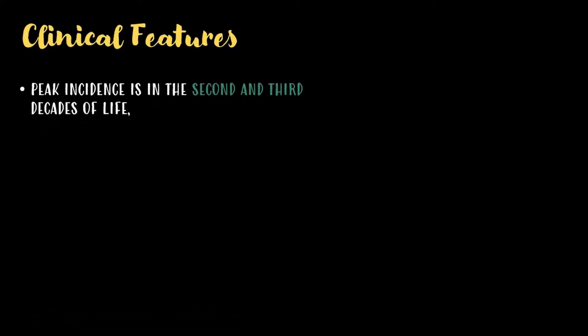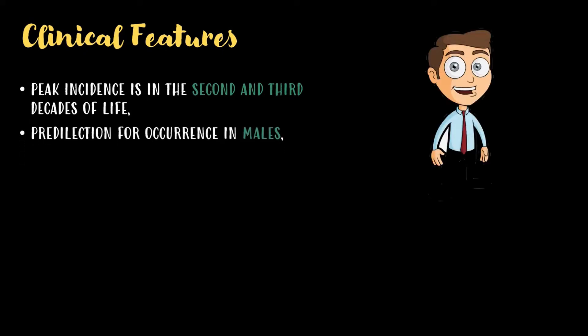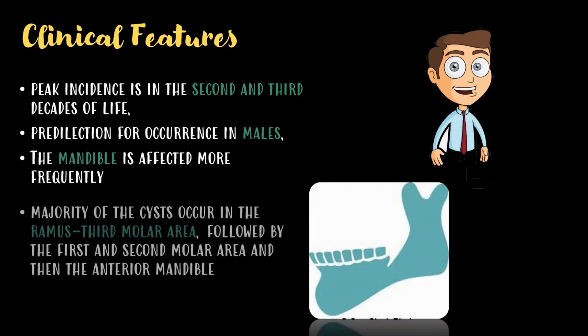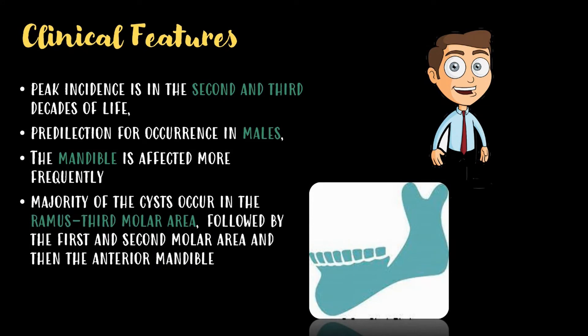Coming to the clinical features, the peak incidence is in the second and third decades of life. There is more predilection for occurrence in males and the mandible is affected frequently. Majority of the cysts occur in the ramus third molar area, followed by the first and second molar area, and then the anterior mandible.